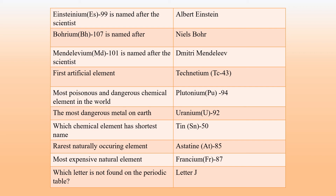Which chemical element has the shortest name? It is Tin. The rarest naturally occurring element is Astatine. The most expensive natural element is Francium.